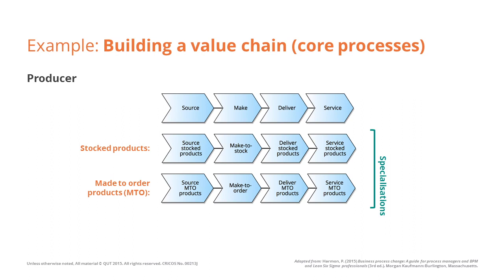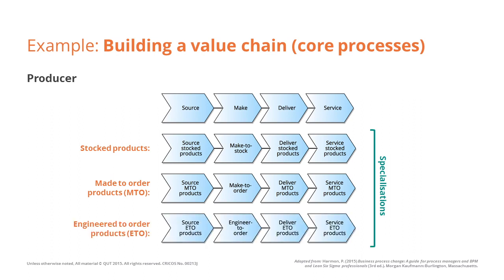And finally, for ETO products — engineer to order products — these are highly customised, low-volume orders. After the first core process, source ETO products, the second core process would be engineer to order, where before making the product, the product is actually engineered. Then deliver ETO products and service ETO products.